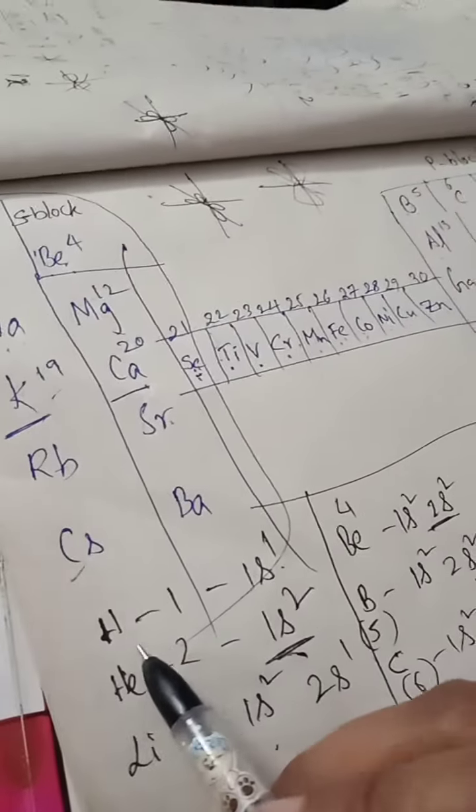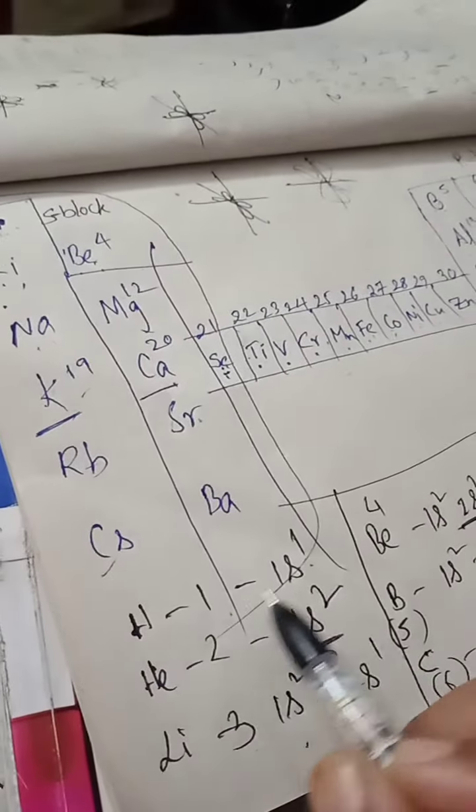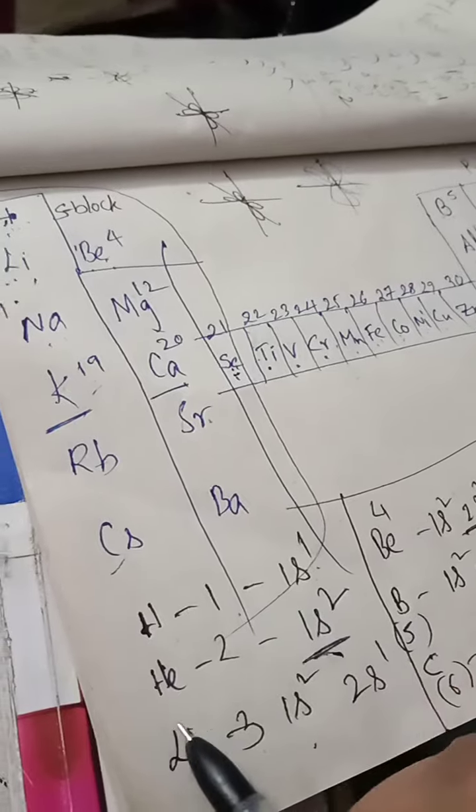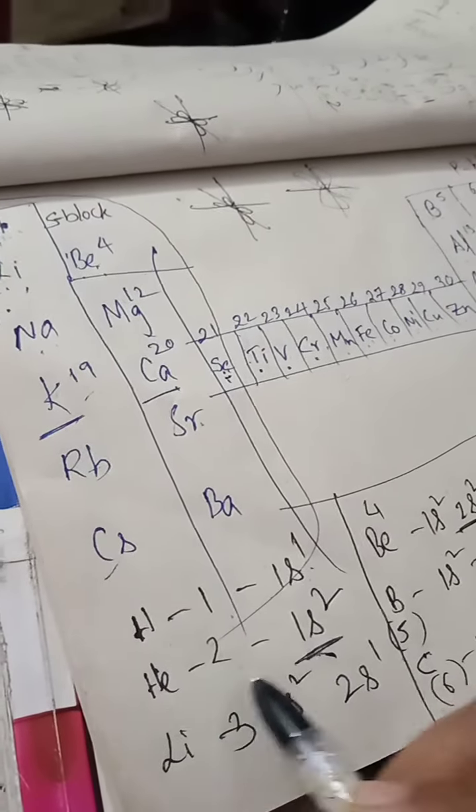We fill the electrons. Hydrogen, atomic number 1: 1s¹. Helium, atomic number 2: 1s².